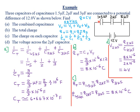For part A, they want us to find the combined capacitance. Because these capacitors are connected in series: 1 over C total equals 1 over 1.5 microfarad plus 1 over 2 microfarad plus 1 over 3 microfarad. If you compute on your calculator, you will get 3 over 2. So 1 over C total equals 3 over 2. Taking reciprocals on both sides: C total equals 2 over 3 microfarad.